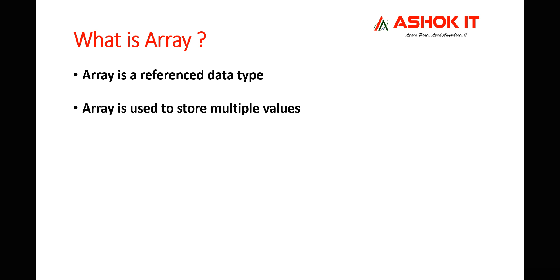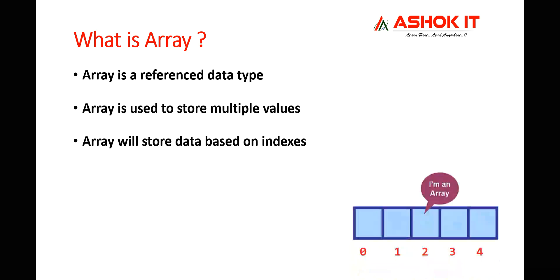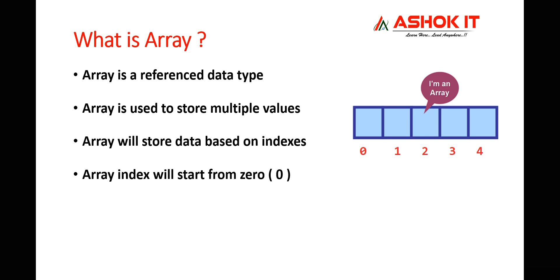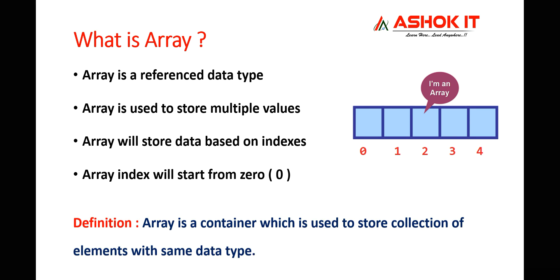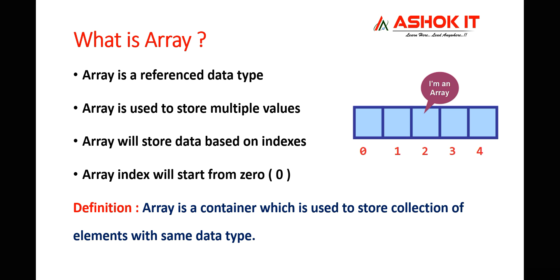An array is a reference data type used to store multiple values. The array stores data based on indexes. For example, if you want to store 10 values, you can store them into a single variable using the array concept. Array index always starts from 0. An array is a container used to store a collection of elements with the same data type — integer array, decimal array, or string array depending on what you want to store.